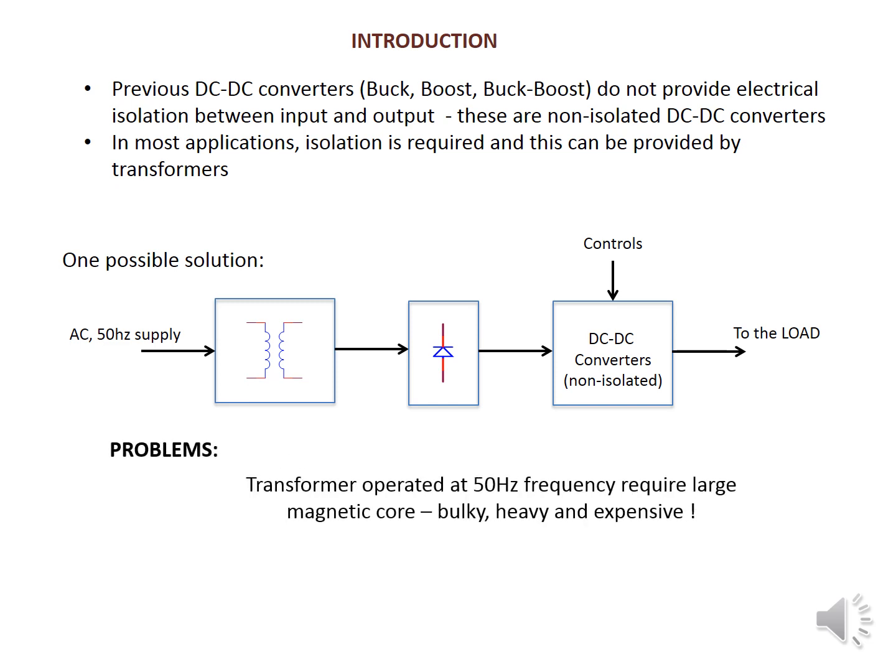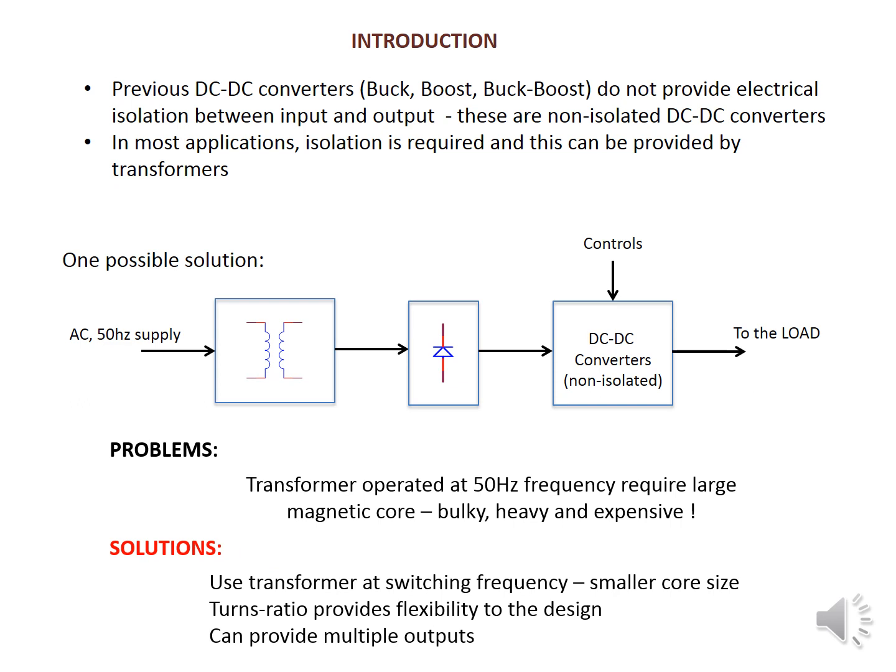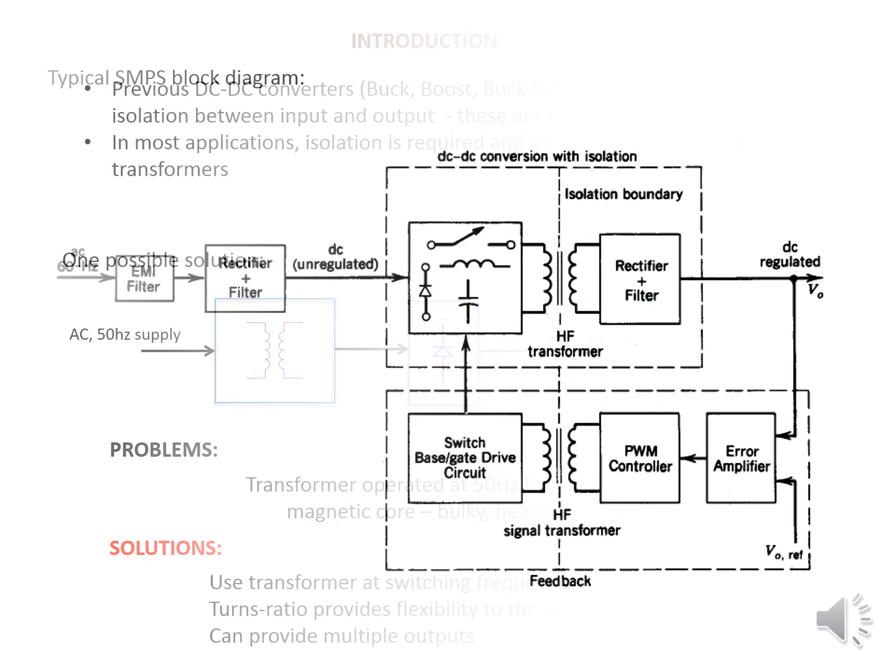The problem is that a transistor operating at 50 Hz frequency requires a large magnetic core, which is very bulky, heavy, and expensive. The solution is to use the transformer at switching frequencies, which allows a small core size. The turns ratio provides very good flexibility in design and can also provide multiple outputs.